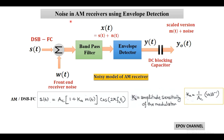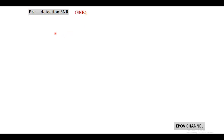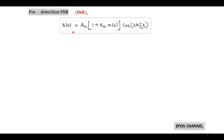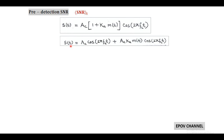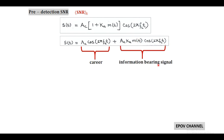After this basic discussion, we move to the noise performance of the standard AM receiver, also called the envelope detector. For this, we first need to find the input signal-to-noise ratio, or pre-detection SNR. We consider standard AM and after opening the bracket we get: S(t) = AC·cos(2πfct) + AC·KA·m(t)·cos(2πfct). The first term is called the carrier and the second term includes the message signal m(t) and is called the information-bearing component.